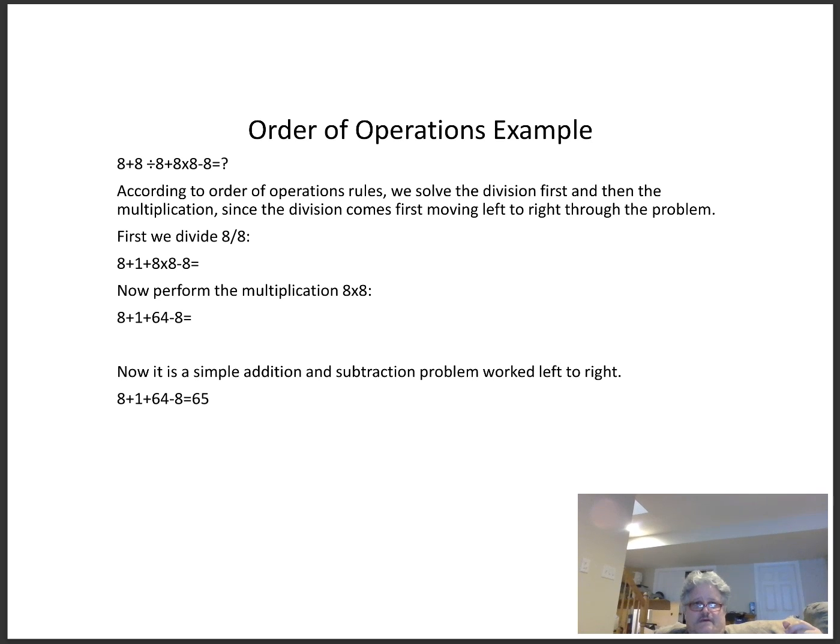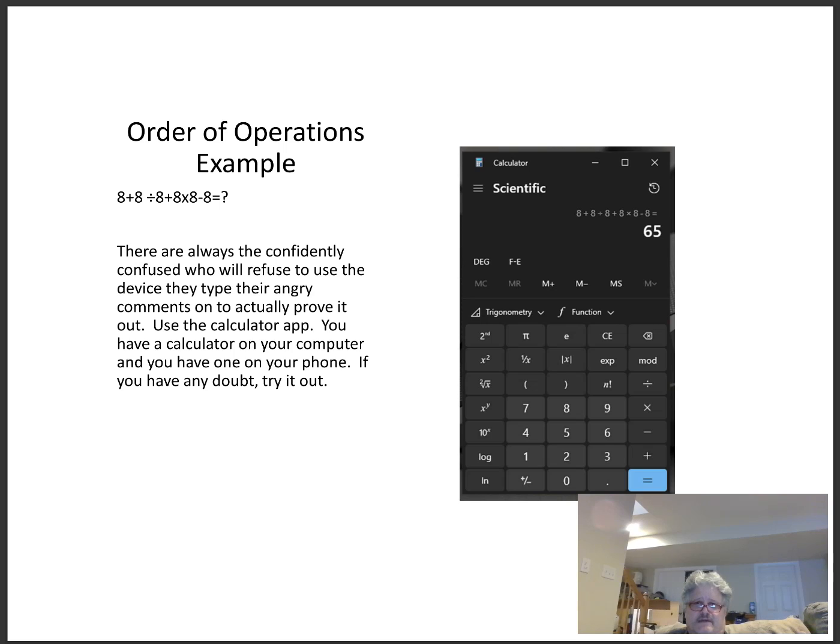Another thing I want to remind people is that a lot of the devices you're typing comments on when you're leaving these posts on Facebook—that same device, whether it's your phone or computer—has this funky thing called a calculator app built into it, which is really an amazing thing. A lot of people don't bother to look at that. Here's an example: this is a scientific calculator right off of my Windows 10 machine. I've entered—I used the scientific calculator, not the standard, that way I could get access to my parentheses and add those in. There's a lot of confidently confused people out there who will refuse to use the device they type their comments on to actually prove it to themselves what the answer is. Go use your calculator app and do it correctly.